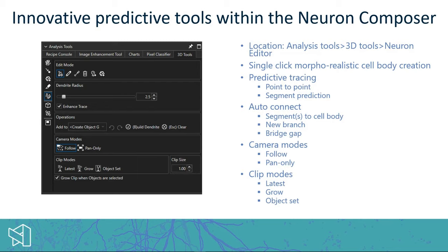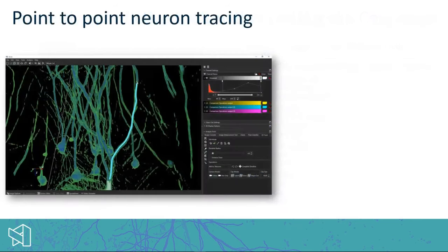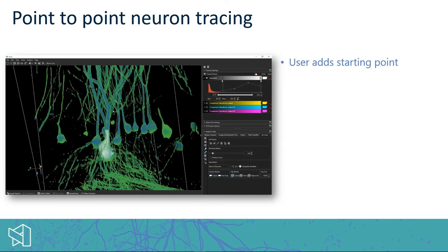We feel we need to develop functionality that helps these neuroscientists get more out of the huge effort they make to create these data sets. In Avia we offer state-of-the-art automated neuron reconstruction as part of one of our recipes, and what I'm talking about today is a fully integrated set of tools that are predictive and user-guided — some manual interaction but very interactive and quick, usable for both curation and creating reconstructions from scratch.